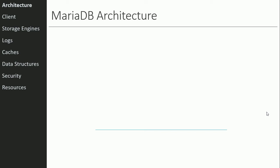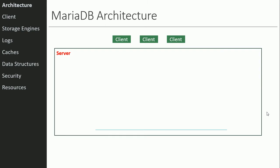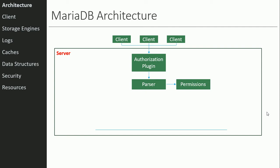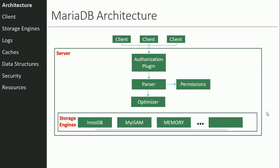The first topic is the architecture for MariaDB, which is very similar to MySQL — nearly identical really. Basically, you've got clients that connect to a server through an authorization plugin, which we'll talk about in more detail starting next week. Once authorized, the client can submit queries which go to a parser. The parser checks your SQL and verifies you have permissions to access those resources, then passes it to a query optimizer.